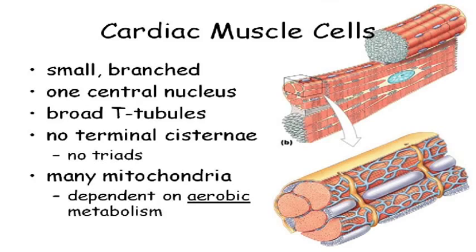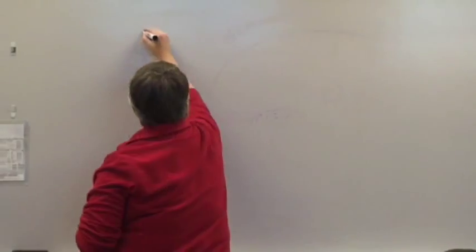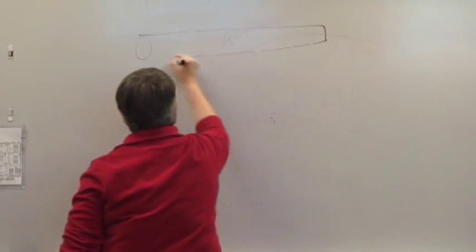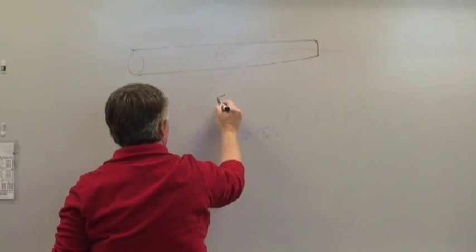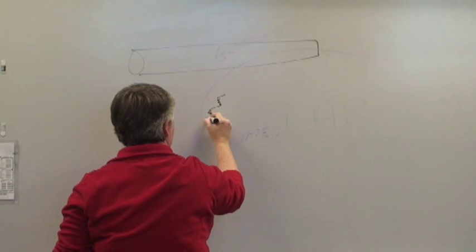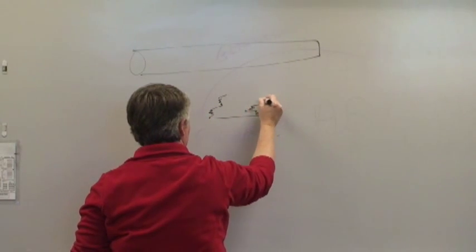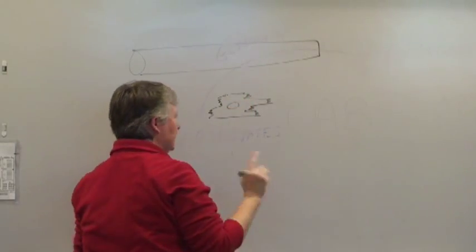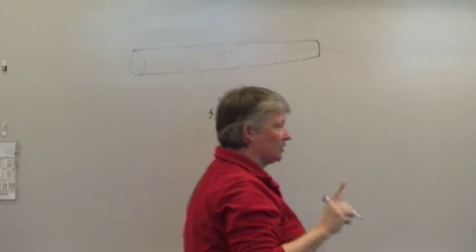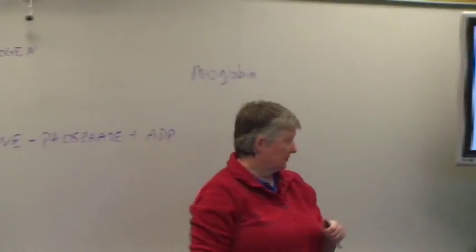But cardiac muscle cells are much smaller. If this is a skeletal muscle cell, this would be a cardiac muscle cell. And usually it only has one nucleus — sometimes you'll see two, but usually only one nucleus in a cardiac muscle cell.